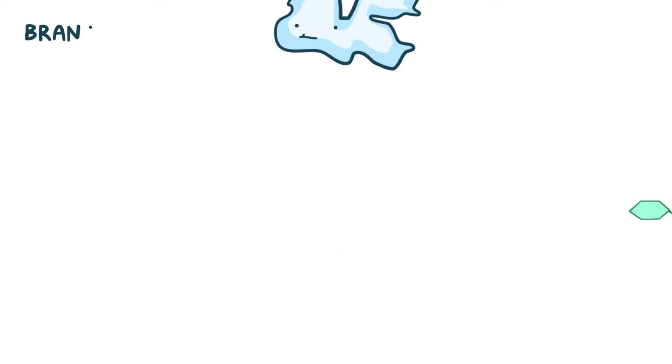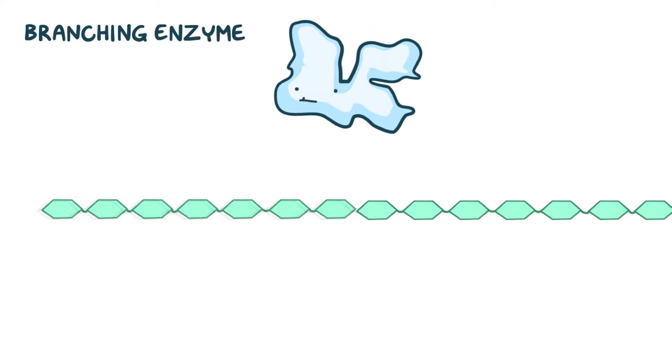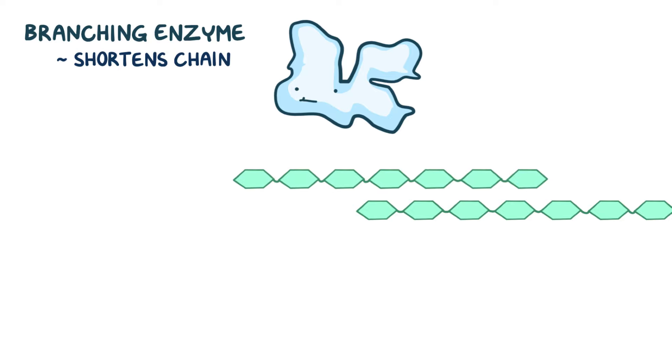Next, an enzyme called the branching enzyme goes to the ends of the chain and cuts off a chain of about six to eight glucose residues in length. The branching enzyme then attaches that chain to the side of the linear glycogen strand by creating an alpha-1,6 glycosidic bond. So there's now a bond between the first carbon of the glucose on the small cleaved segment and the sixth carbon of a glucose that's part of the linear chain.